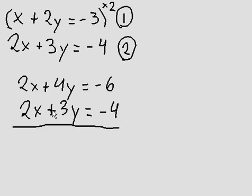Now that we have matching coefficients here, 2x and 2x, I will subtract the bottom equation from the top. 2x minus 2x is 0, so that's gone. I don't even need to write it. 4y minus 3y is just y.